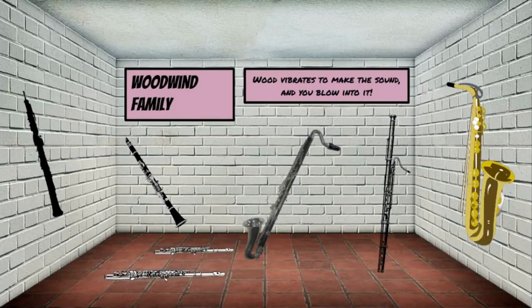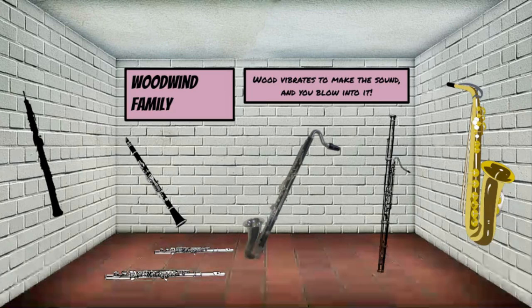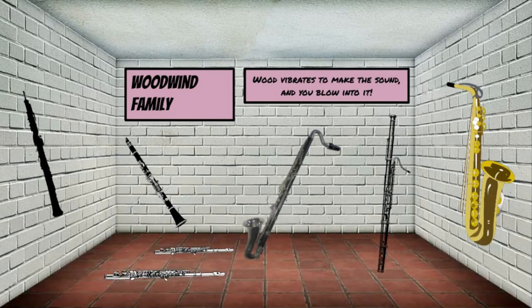Then we have the woodwind family. Everyone say woodwind. The woodwind family has two characteristics: wood vibrates to make the sound, and also you blow into a woodwind instrument. Here we have an oboe on the left, a clarinet, on the floor there's a flute and a piccolo, a bass clarinet in the middle, a bassoon, and on the wall on the right we have a saxophone.